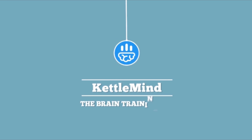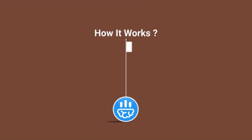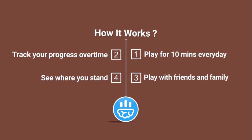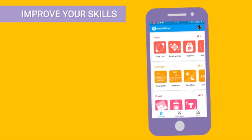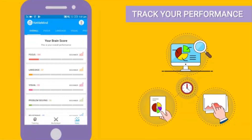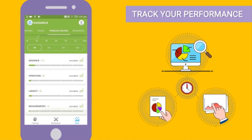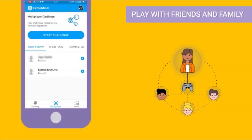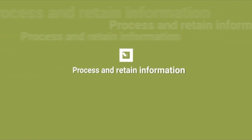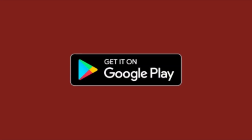Introducing Kettlemind, which provides you with personalized brain training. Practice 10 minutes every day, track your progress over time, play with friends and family, and see where you stand. Kettlemind has 25 fun and interactive learning games to improve your skills. Track your performance on a daily basis, challenge and compete with friends and family on multiplayer. Kettlemind helps you increase attention span, process and retain information, and enhance reasoning and decision-making skills. Download from Google Play right now.